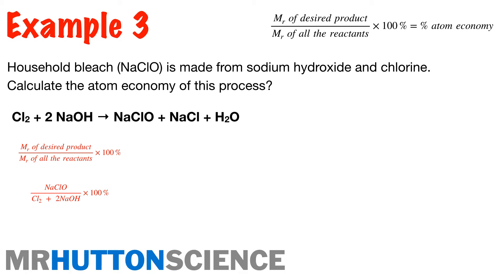So we just put that straight into our equation there. Then we use our relative atomic masses from the periodic table. Add them all up there. So it gets simplified down to 75.5 over 151 times 100 to give us 49.3%.